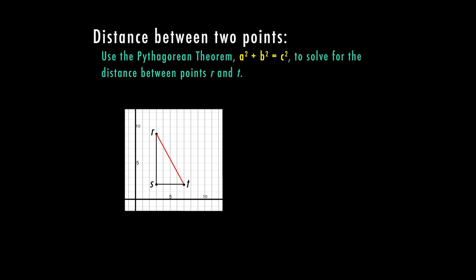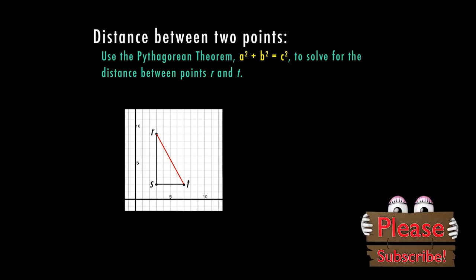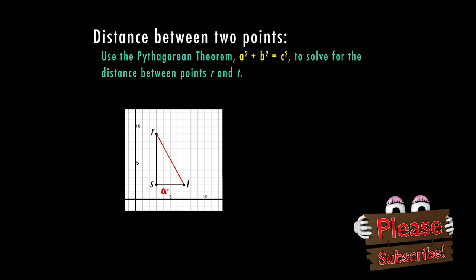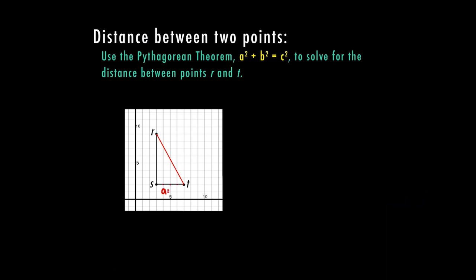It's pretty easy to find the distance between r and s and s and t. So for this one, we're going to go ahead and just use our knowledge of graphs and we're going to count. So I can clearly see between s and t, we're going to make this our a because it is the horizontal line here. So between s and t, we are moving 1, 2, 3, 4 places. So the distance there is 4.